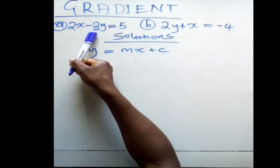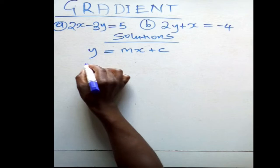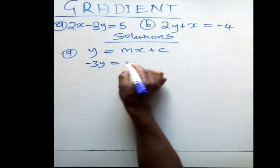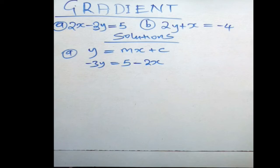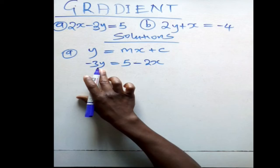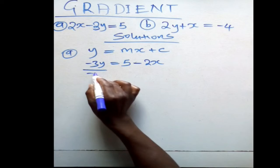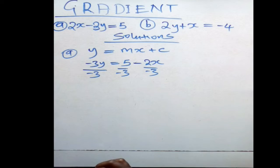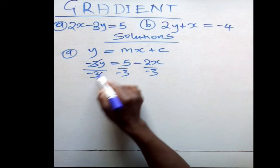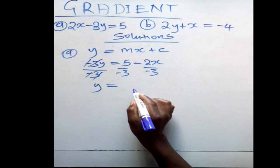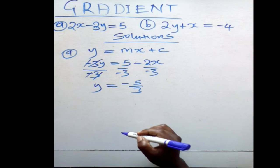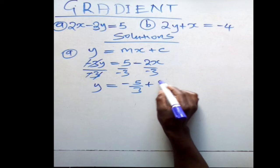For question A, the first stage is to make y the subject of the formula. Moving 2x to the other side gives -3y = 5 - 2x, which becomes -3y = -2x + 5. Then divide throughout by -3. Negative divided by negative is positive, so y = 2/3 x - 5/3.